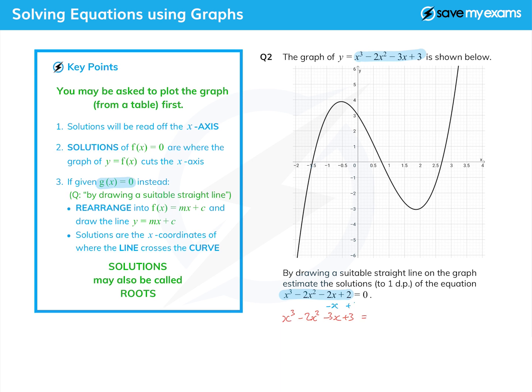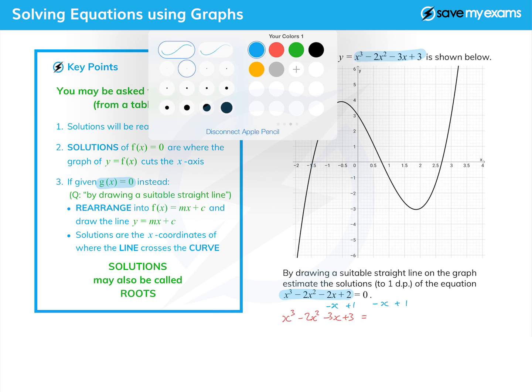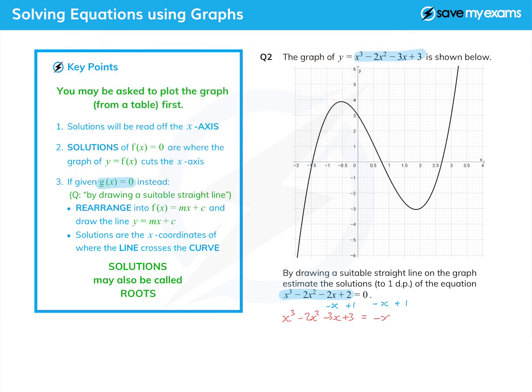Minus 2x take away an x gives me minus 3x, and add the 1 takes me from 2 to 3. But it's an equation, so I have to do the same to the other side: minus x and plus 1. And that gives me, unsurprisingly, minus x plus 1 on the other side.